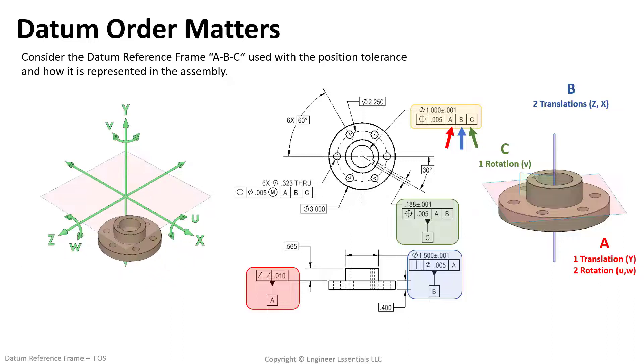See here how datum A locks in the first three degrees of freedom. Then B locks in two translations. And datum C locks in the final rotational degree of freedom, thus fully constraining the datum reference frame.